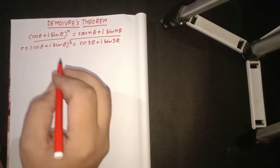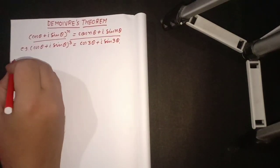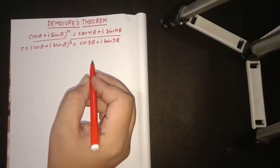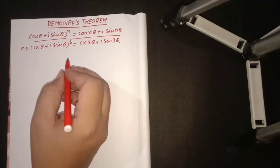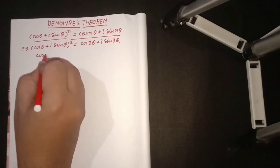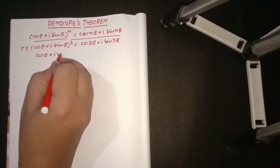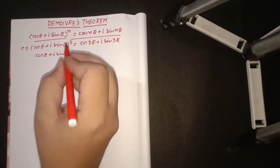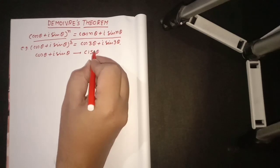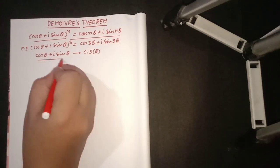And if you want to prove this result, the proof can be made with the help of the mathematical induction concept. Now the function cos θ + i sin θ is a very important function and it also can be written in the form of cis θ. It is the short form of cos θ + i sin θ.